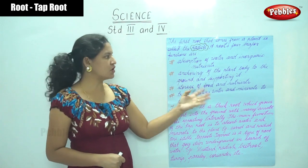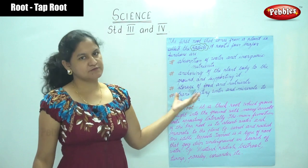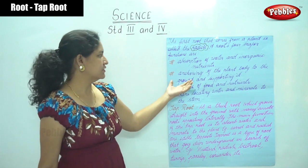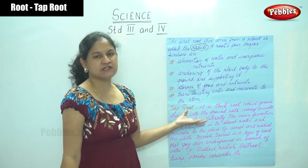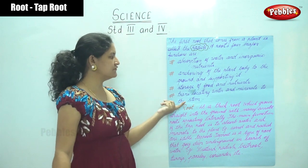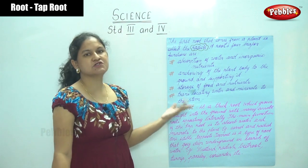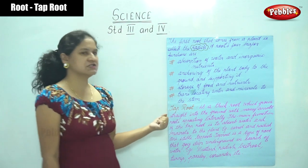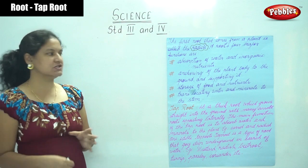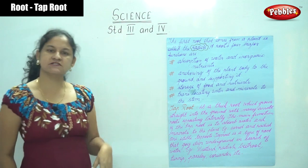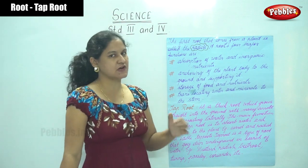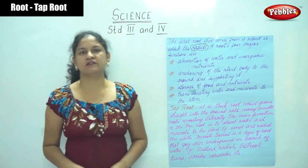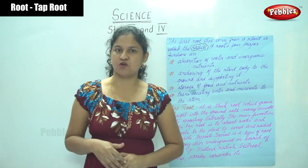To summarize: first is absorbing water and inorganic nutrients; second is anchoring the plant to the ground and supporting it; third is storage of food and nutrients; and fourth is translocating water and minerals to the stem. In roots, we are going to see the two main types of root.